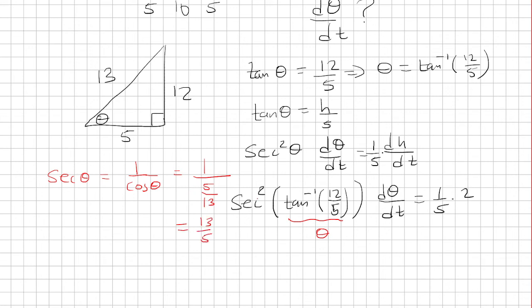Now, all you have to do is square it because it's secant squared. That's 169 over 25, dθ/dt. And that's equal to 2/5.